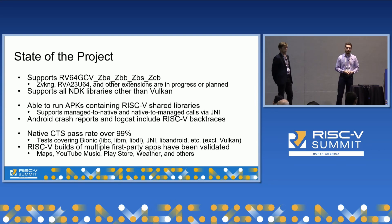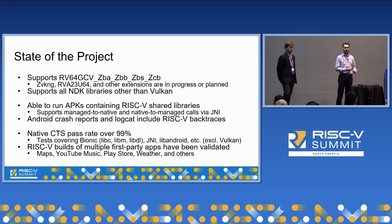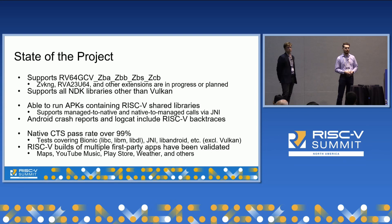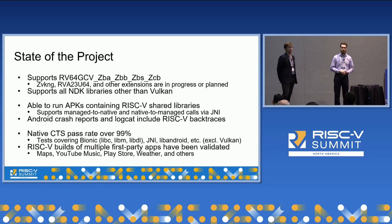Android uses something called CTS, or Compatibility Test Suite, to self-test. Some of those tests contain native code. If you run those native-code-carrying tests under Berberus, you get a pass rate of over 99% — covering things like Bionic, which is the Android libc implementation, and all those other NDK libraries. Going a step beyond that, we've actually validated multiple first-party apps built for RISC-V and tested under Berberus, finding that Maps, YouTube Music, Play Store, and a couple of other apps are working and actually quite performant.